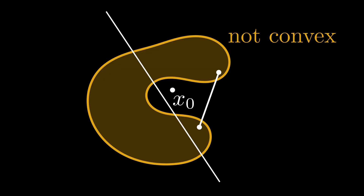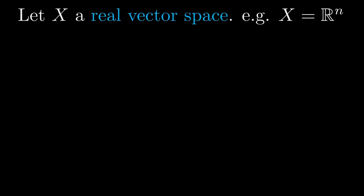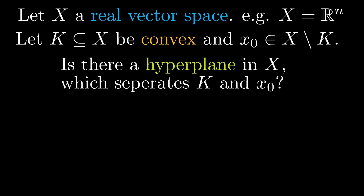More generally, consider a real vector space of any dimension, for example spaces like R^n. Given a convex set and a point not in the set, is there a hyperplane in X which separates the convex set from the point?